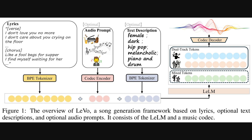Figure 1 gives us a great visual for how this whole Levo system works. On the left, you see the inputs — it takes lyrics, but also optional prompts like a text description, say female voice, hip-hop, melancholic. These text inputs are processed by a BPE tokenizer, which breaks the words down into smaller pieces for the model.